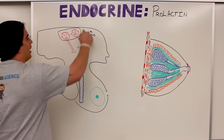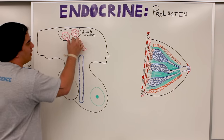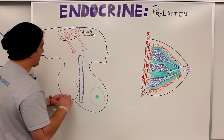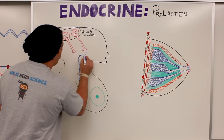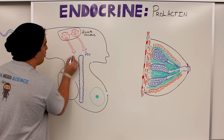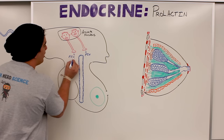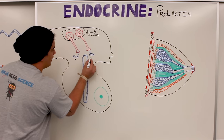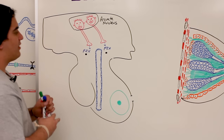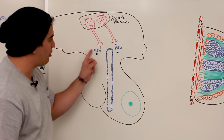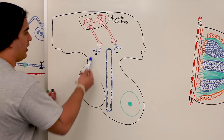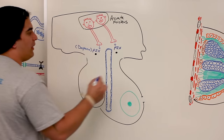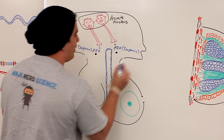The arcuate nucleus is a group of cell bodies in the central nervous system. Their axons come together and secrete different types of chemicals. One of the main chemicals we're going to look at is called prolactin inhibiting hormone. Now, prolactin inhibiting hormone is actually also called dopamine. So dopamine is just another name for prolactin inhibiting hormone.